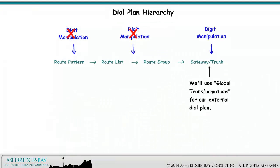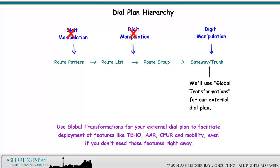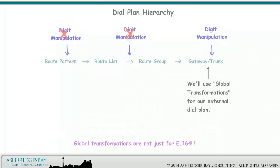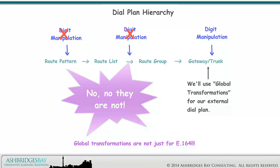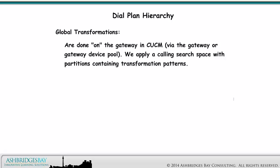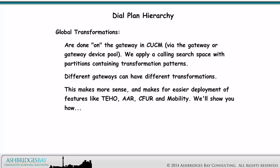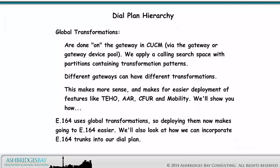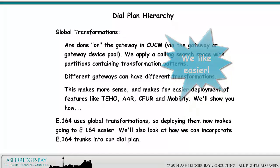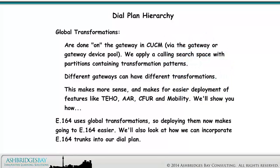We'll use global transformations for our external dial plan. Use global transformations for your external dial plan to facilitate deployment of features like T-HO, AAR, and C4N mobility, even if you don't need those features right away. Global transformations are not just for E.164. They are done on the gateway in CUCM via the gateway or gateway device pool. E.164 uses global transformations, so deploying them now makes going to E.164 easier. We'll also look at how we can incorporate E.164 trunks into our dial plan.